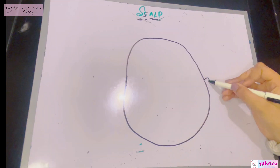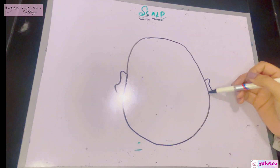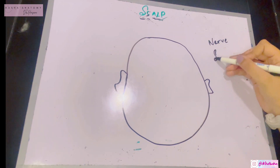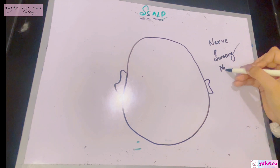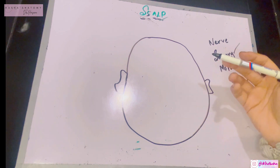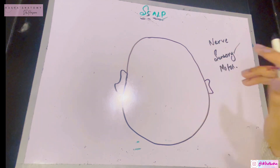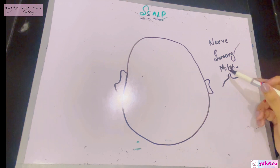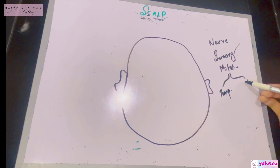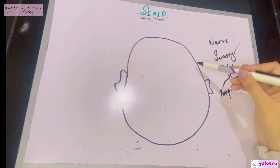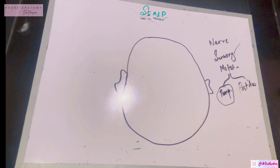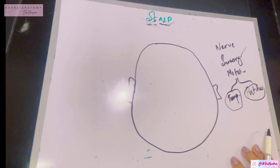Now we divide the scalp into anterior and posterior parts for nerve supply. There is sensory supply — carrying sensation when the scalp is touched — and motor supply for movement. The motor supply: anterior to the auricle is the temporal branch of the facial nerve; posterior to the auricle is the posterior auricular branch of the facial nerve.